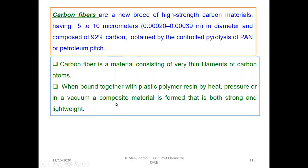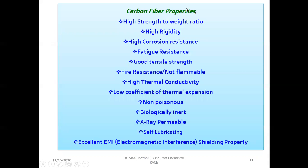When carbon fiber is blended with a polymeric resin and subjected to heat treatment, pressure, or vacuum to form a composite material, it yields a very strong and lightweight material. Carbon fiber has very important properties: very high strength-to-weight ratio, very high rigidity, high corrosion resistance — it will not react with chemicals like metals and steel structures. It also has very high fatigue resistance, good tensile strength, is not flammable, has high thermal conductivity, low coefficient of thermal expansion, is not poisonous, is biologically inert, x-ray permeable, self-lubricating, and has excellent EMI shielding property.